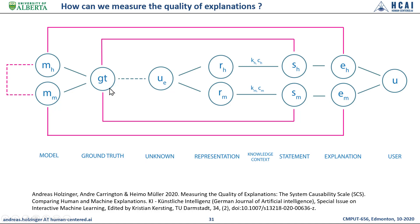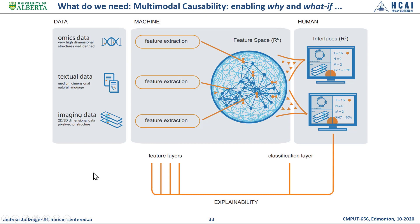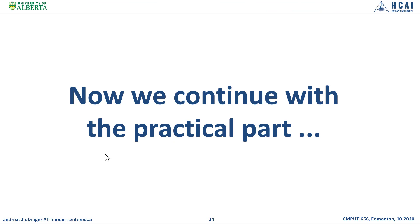I conclude from the first part. What we need in the future is multi-modal explainability — where modal comes from modality, not model — and causability, enabling an expert not only to ask questions but also to evaluate the quality of explanations received from an explainable AI method. Multi-modal causability is important because in medicine, different modalities contribute to one single result. Our future goal is to provide human-AI interfaces which enable the domain expert to ask why and what-if counterfactual questions. Thank you very much for your kind attention to the first part. Now Anna will take over and we continue with the practical part.